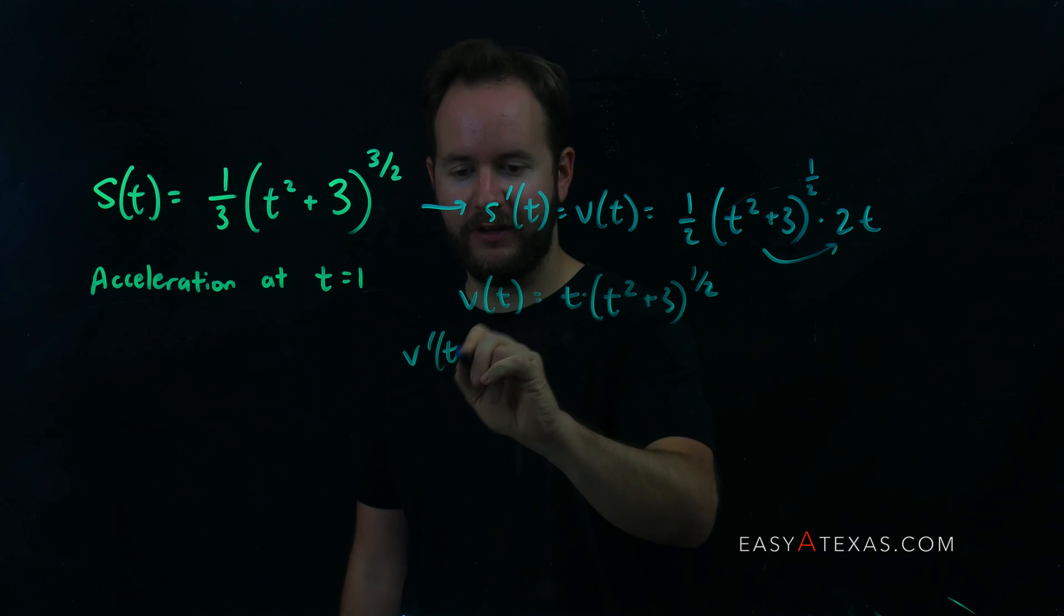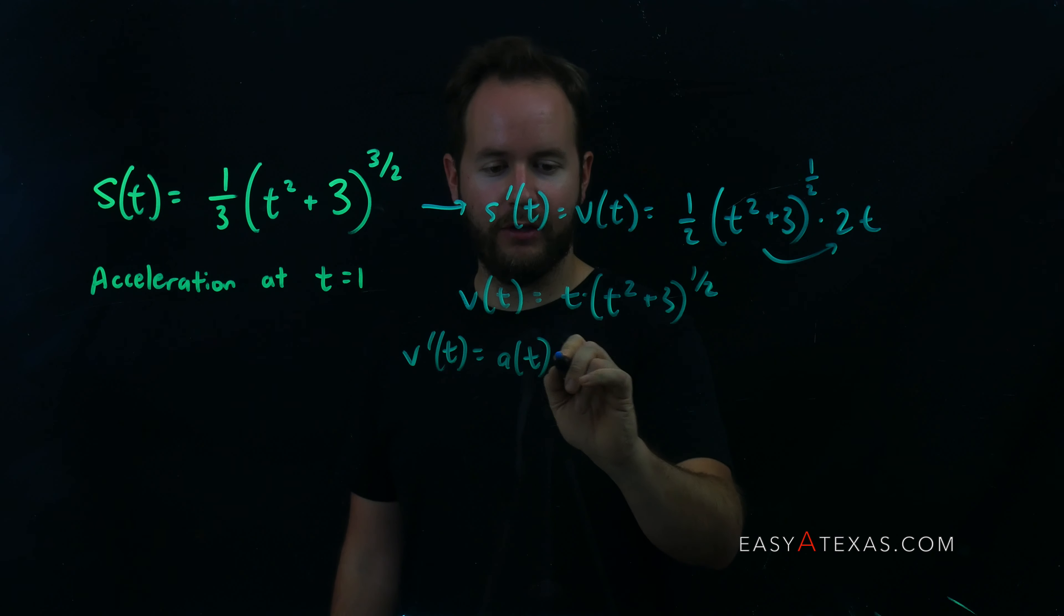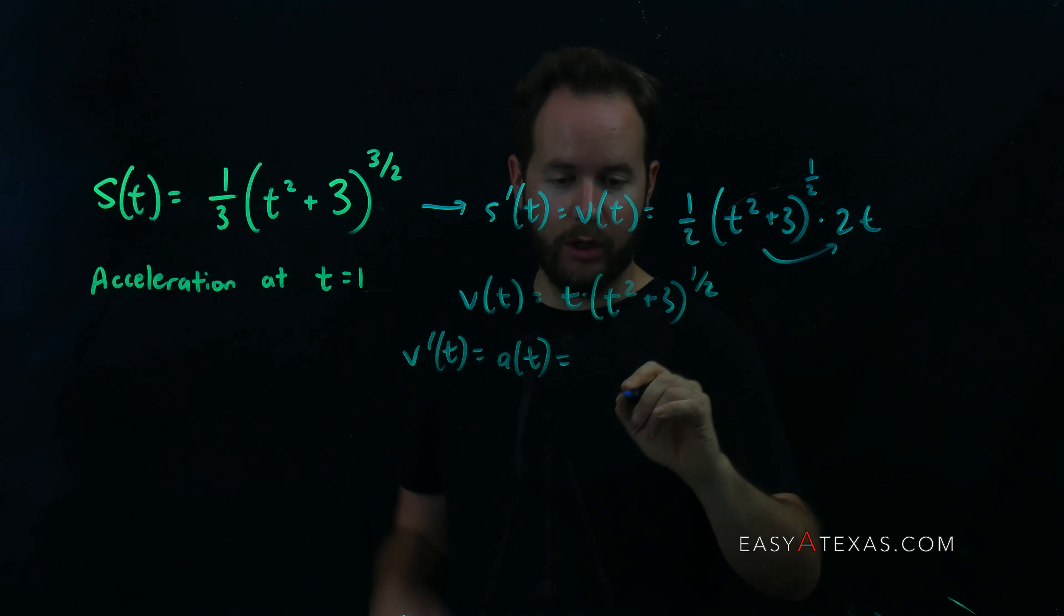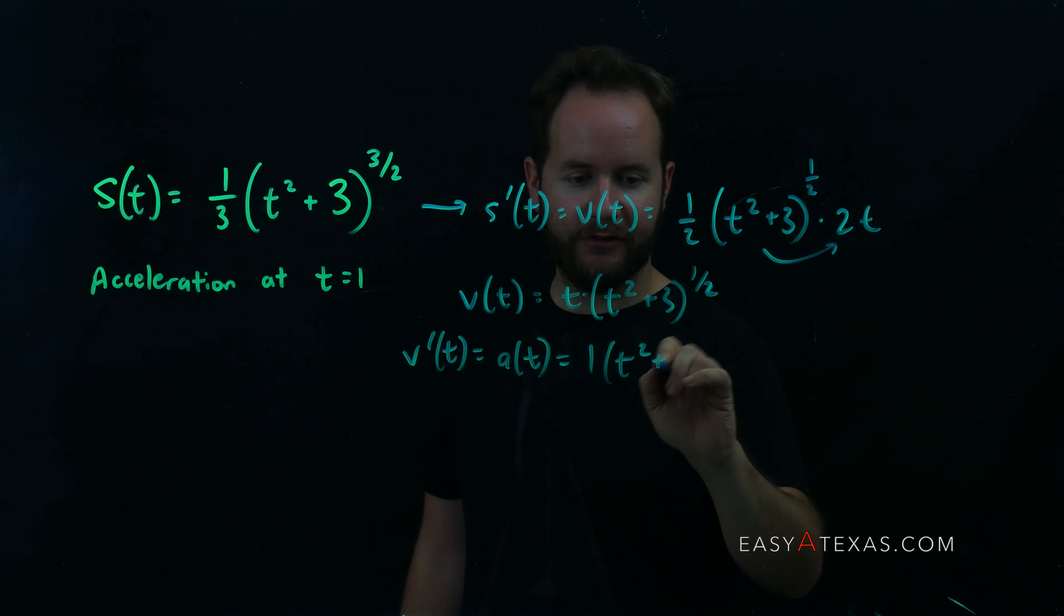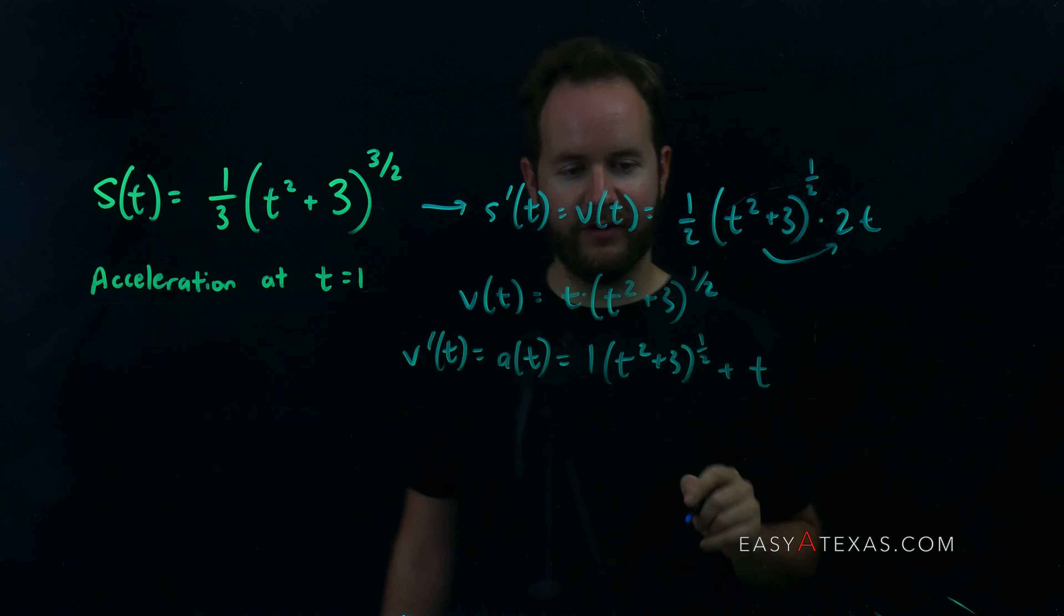So when I go to take this derivative, v prime of t, this will be our acceleration, I'm going to use the product rule. I'm going to take the derivative of t, which is just one, leaving the t squared plus three to the one half alone. And now I'm going to leave the t alone and take the derivative of t squared plus three to the one half.